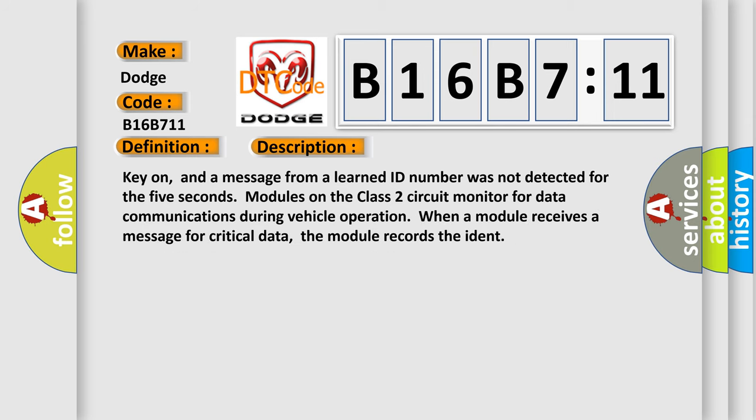Key on, and a message from a learned ID number was not detected for 5 seconds. Modules on the class 2 circuit monitor for data communications during vehicle operation. When a module receives a message for critical data, the module records the ident.